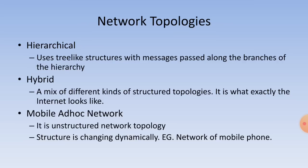Hierarchical topology uses tree-like structures with messages passed along the branches of the hierarchy. Hybrid is a mix of different kinds of structured topologies — it is what the internet looks like. Mobile ad hoc network (MANET) is an unstructured network topology whose structure is changing dynamically, for example a network of mobile phones.